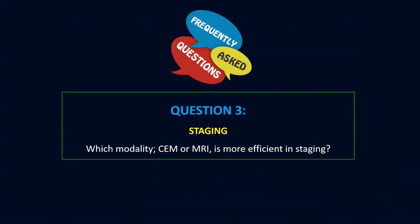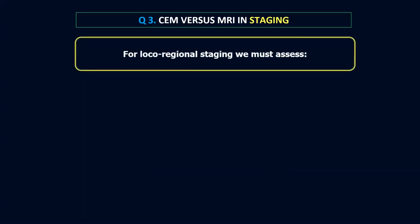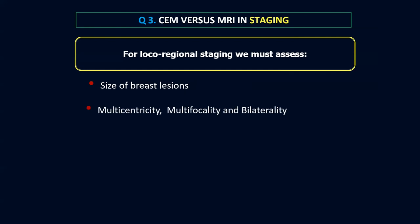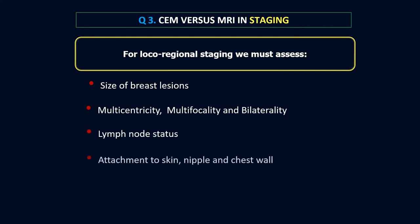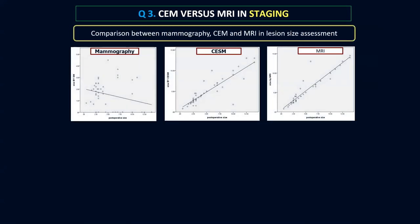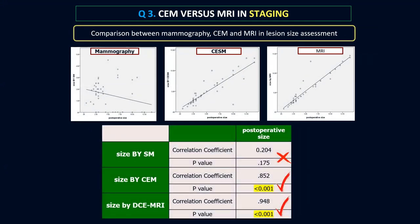Moving to question three about staging: which modality to use in local staging. For local regional staging, we must assess the size of breast lesions, the multiplicity of the lesions, the lymph node status, and attachment to skin, nipple, and chest wall. We have done several comparative studies in our department assessing the difference between the correlation between lesion sizes measured on mammogram, contrast mammography, and MRI compared to post-operative pathology. There was excellent correlation when using contrast mammography and MRI with post-operative pathology, but not with standard mammography alone.